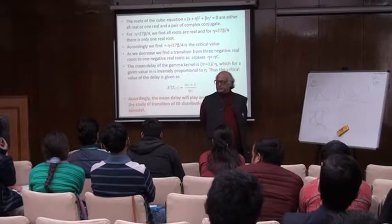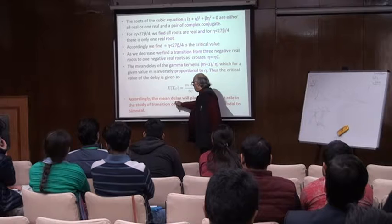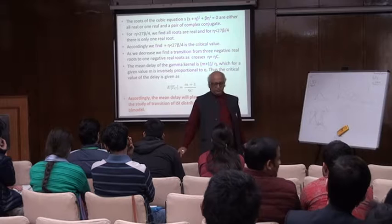So this means there is a time — an expected time — and if this time is of this type, according to the mean delay, if the delay is more than this, it will lead to oscillation. For normal human beings, this should be less, otherwise it leads to pathological behavior.